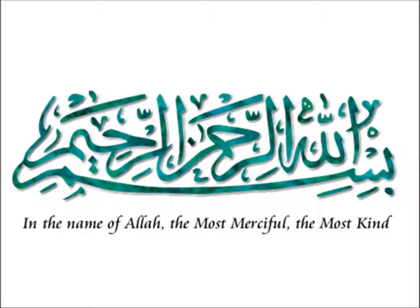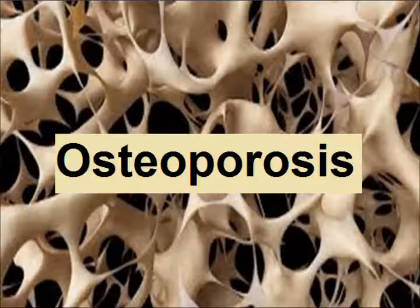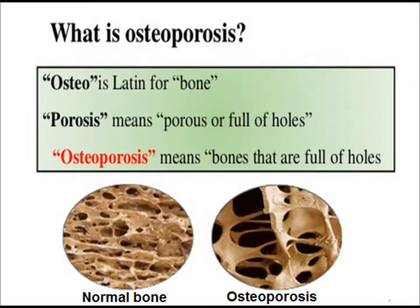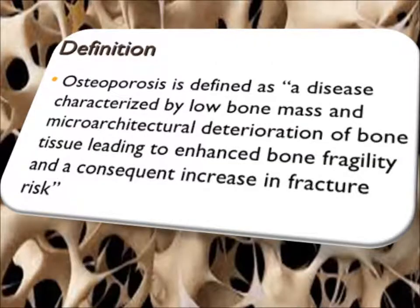Today we are going to discuss osteoporosis. Osteo is Latin for bone and porosis means porous or full of holes — so osteoporosis means bones that are full of holes. By definition, osteoporosis is a disease characterized by low bone mass and micro-architectural deterioration of bone tissue, leading to enhanced bone fragility.